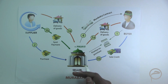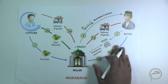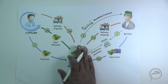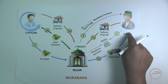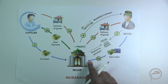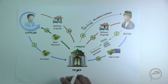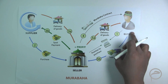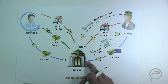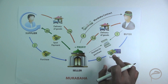We have discussed Murabaha and Musawama. The third is Baybittaman Ajal. The structure in Baybittaman Ajal is also very similar, and the only difference is that in Baybittaman Ajal, it is essential that the payment from the customer to the seller is always deferred. This is the main feature of the Baybittaman Ajal transaction. Unlike in a Murabaha, where the payment obligation from the buyer to the bank could either be immediate or deferred, in a Baybittaman Ajal this payment has to be deferred.